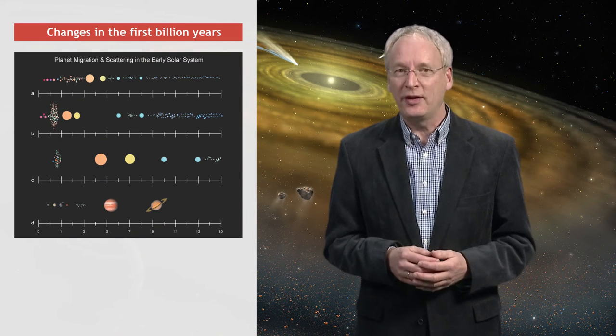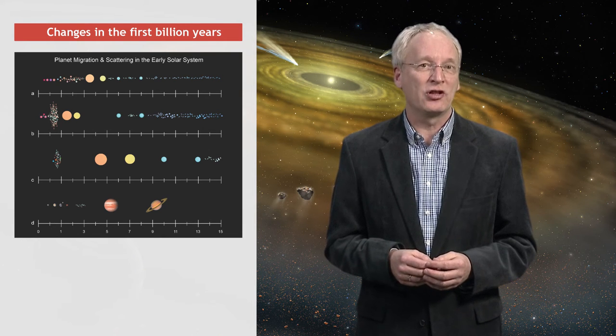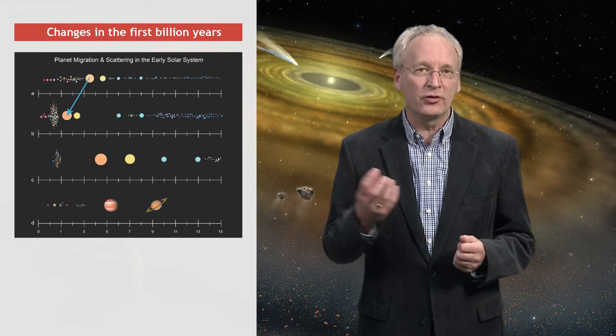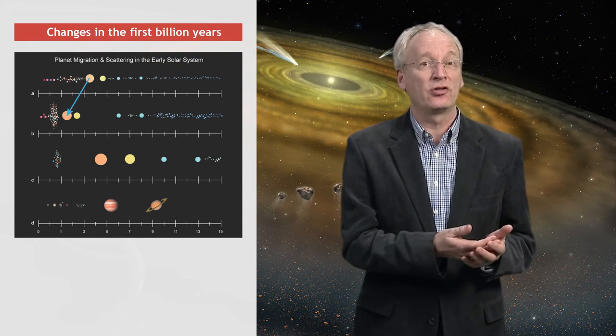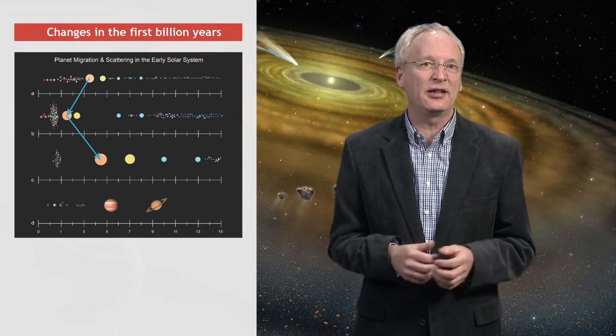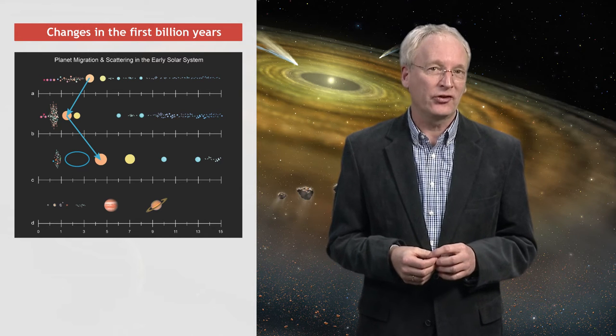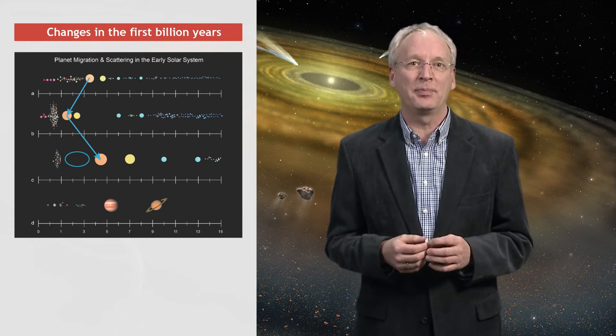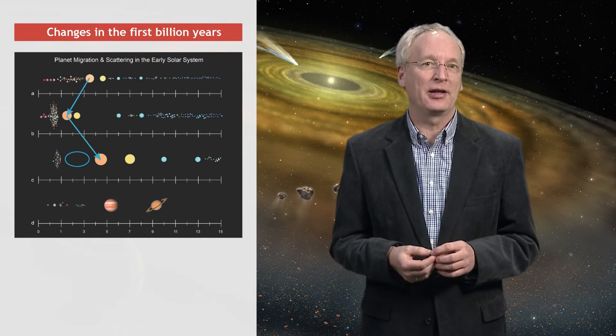For example, one theory says that Jupiter in its early days made a big excursion into the inner solar system, almost to the location where the Earth is right now. After that excursion it went back out. But it left behind a stirred up and depleted region, which helps to account for the low mass of Mars, and for the fact that the asteroid belt has very little mass remaining, clearly not enough to make a full sized planet.